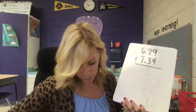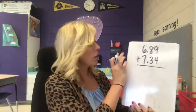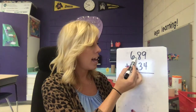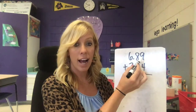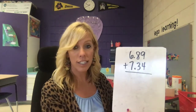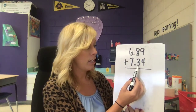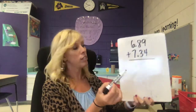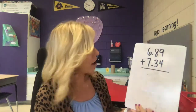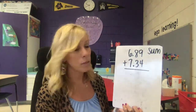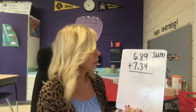All right, number seven on page 353. First let's practice saying these numbers. Think about how we're supposed to say them. Six and 89 hundredths, because this is our tenths and this is our hundredths. Seven and 34 hundredths, because you have two digits after the decimal — it's in the hundredths place. So we're going to be adding those values today. When we're adding values, we're finding our sum, S-U-M. You may see that word — it just means the answer to an addition problem.